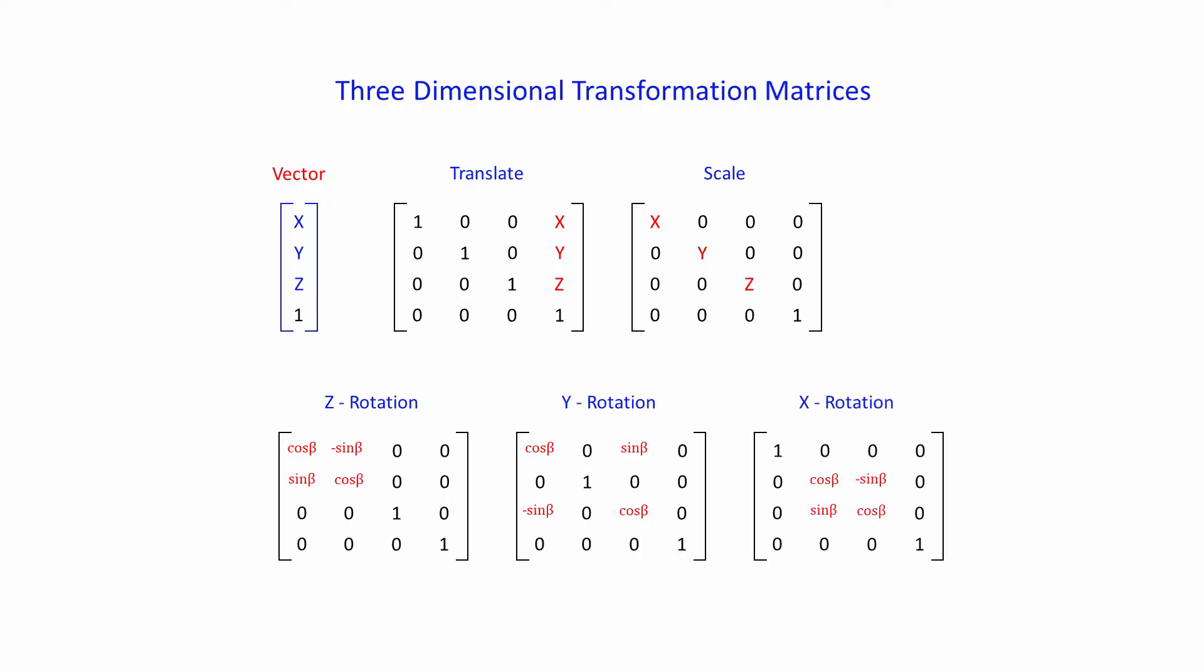We have three separate rotation matrices. The Z rotation matrix is very similar to the 2D rotation matrix. The values that control the amount of rotation are all situated in the top left corner. You might expect this because in two dimensions only the X and Y coordinates of a vector are changed by rotation.